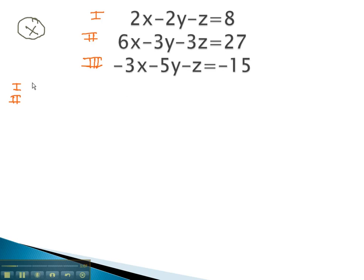Equation 1 has 2x minus 2y minus z equals 8. Equation 2, 6x minus 3y minus 3z equals 27.